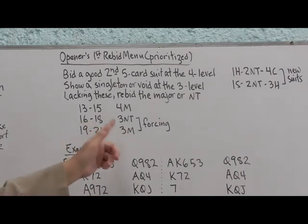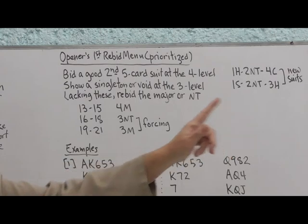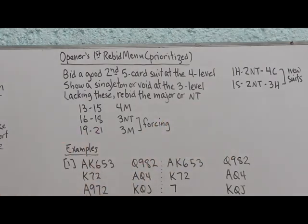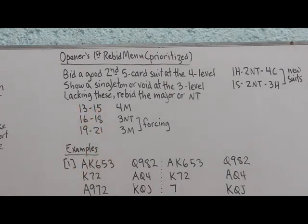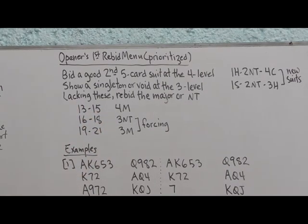With 19 to 21 points, the bidding would go something like one heart, two-no-trump, three hearts. That shows the big hand, the maximum one-level opening bid. And both of these bids are forcing. Remember, we're promising to not stop before we get to four of the major.